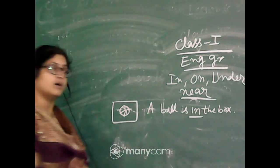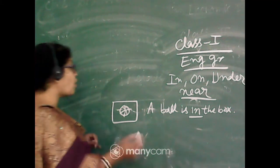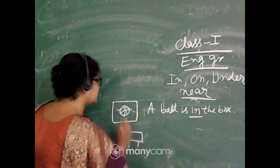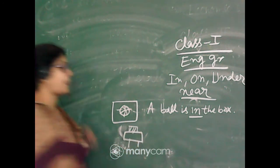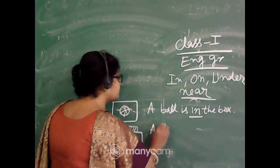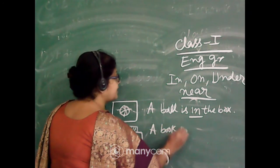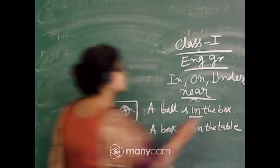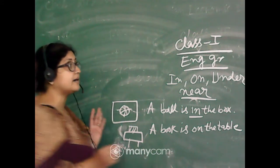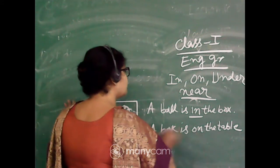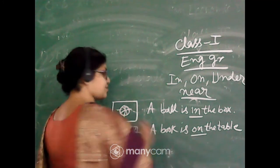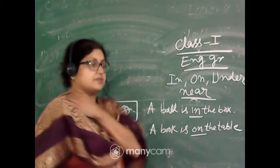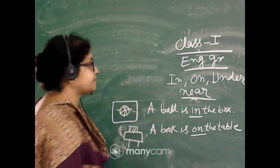On, here one table is there, here one book is there. So a book is on the table. Please remember this: book is on the table. It is touched. When it is touched, that time it is telling on, on preposition.